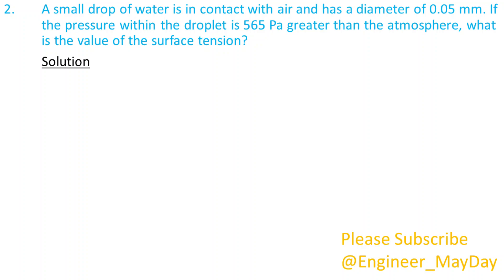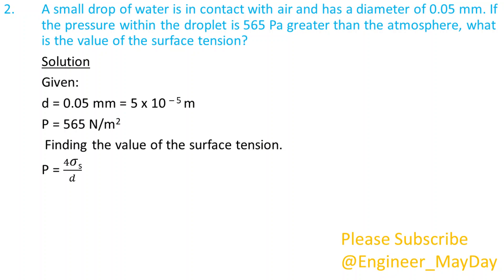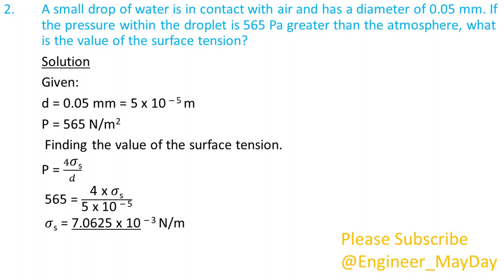Solution. Given: D equals 5 times 10 to the power negative 5 meters, delta P equals 565 newtons per square meter. Finding the value of the surface tension, which equals 7.0625 times 10 to the power negative 3 newtons per meter.